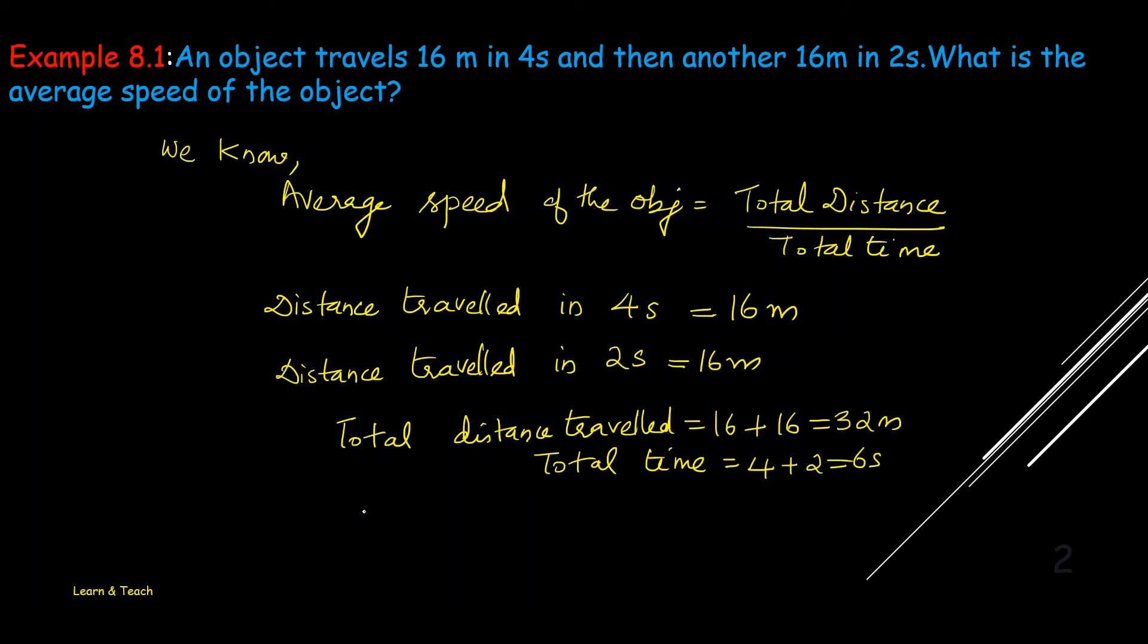Then, we need to find the average speed. Average speed equal to, you know, this is the total distance by total time. Total distance here is 32 by total time equal to 6.